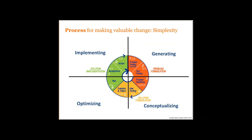Most of you will be familiar with this, and some of you are not. There are ways to do that, but we're talking about a process for making valuable change — this is not a tool, it's a process. There are four stages: the generation of new possibilities, the conceptualization of the possibility, optimization of a solution, and the implementation. Each of them has different parts on the eight-step wheel.